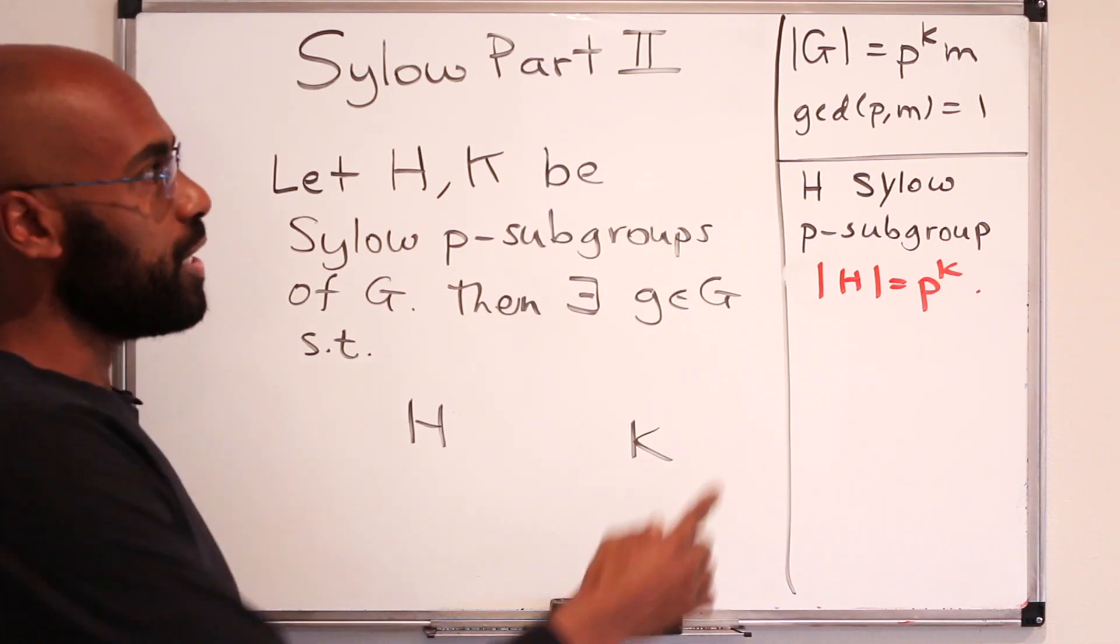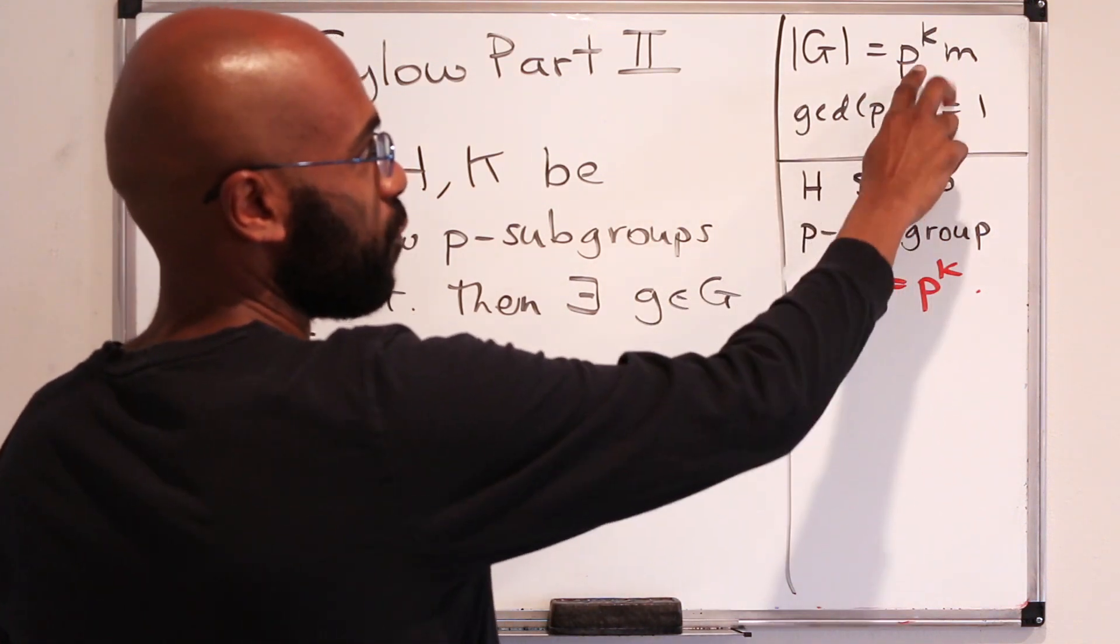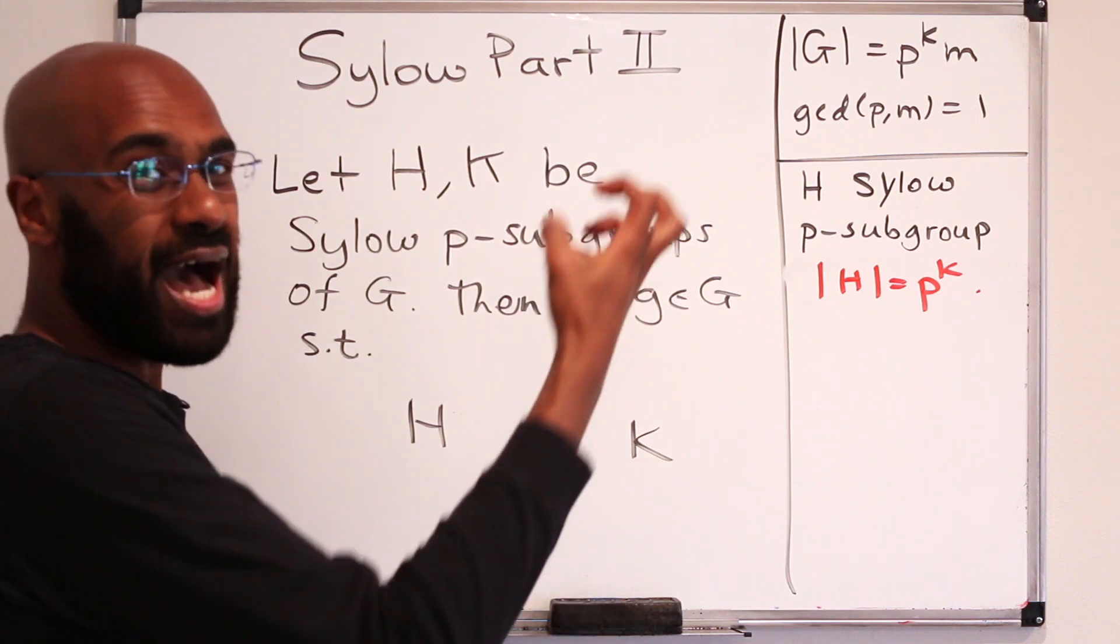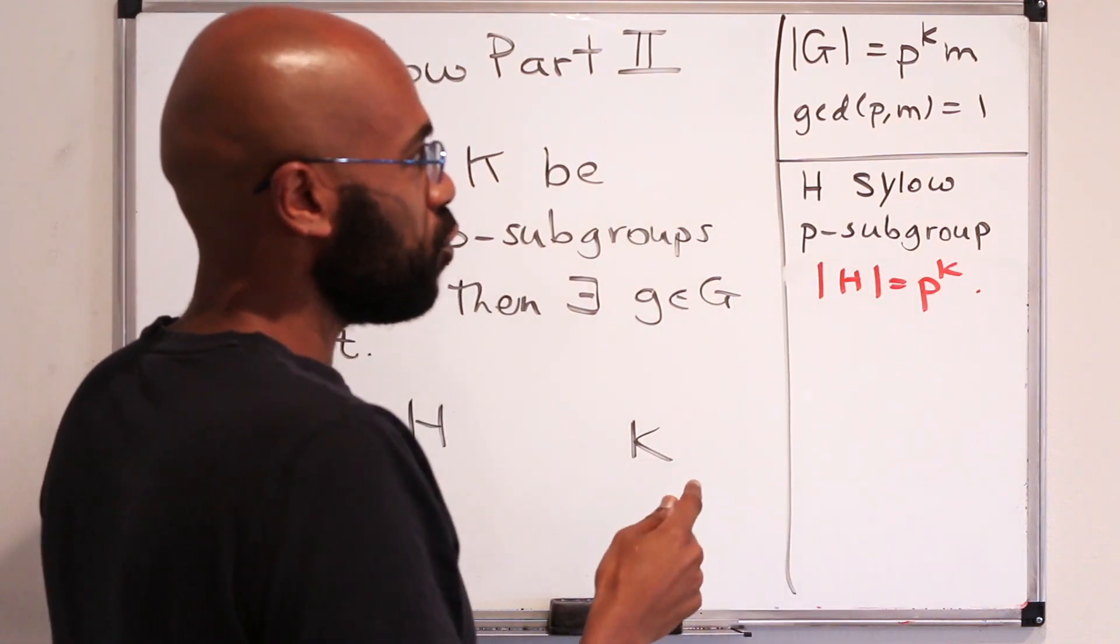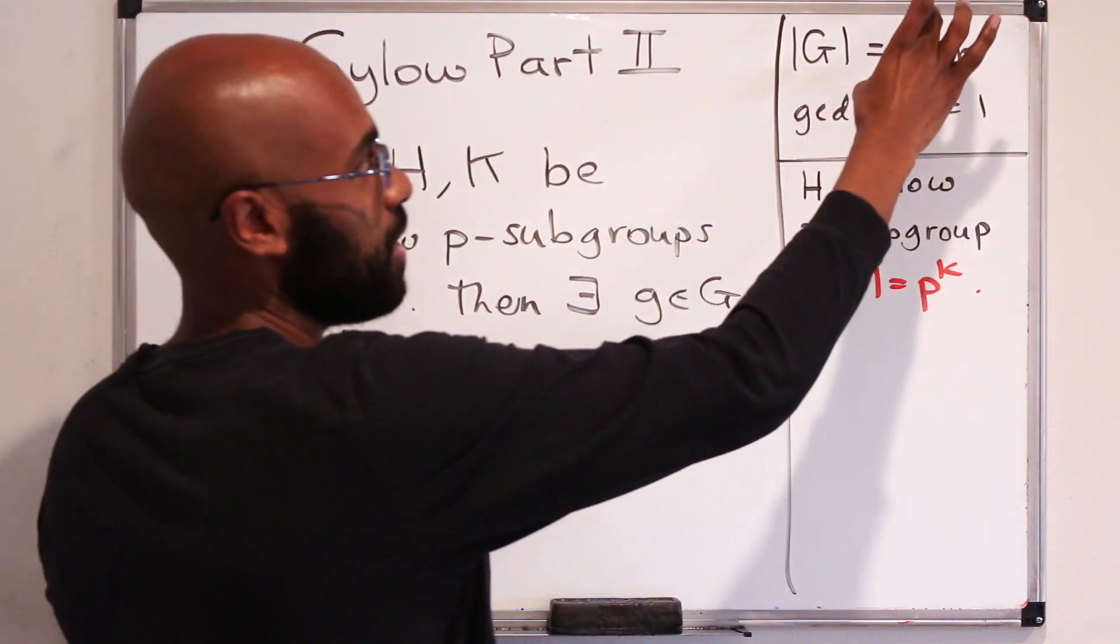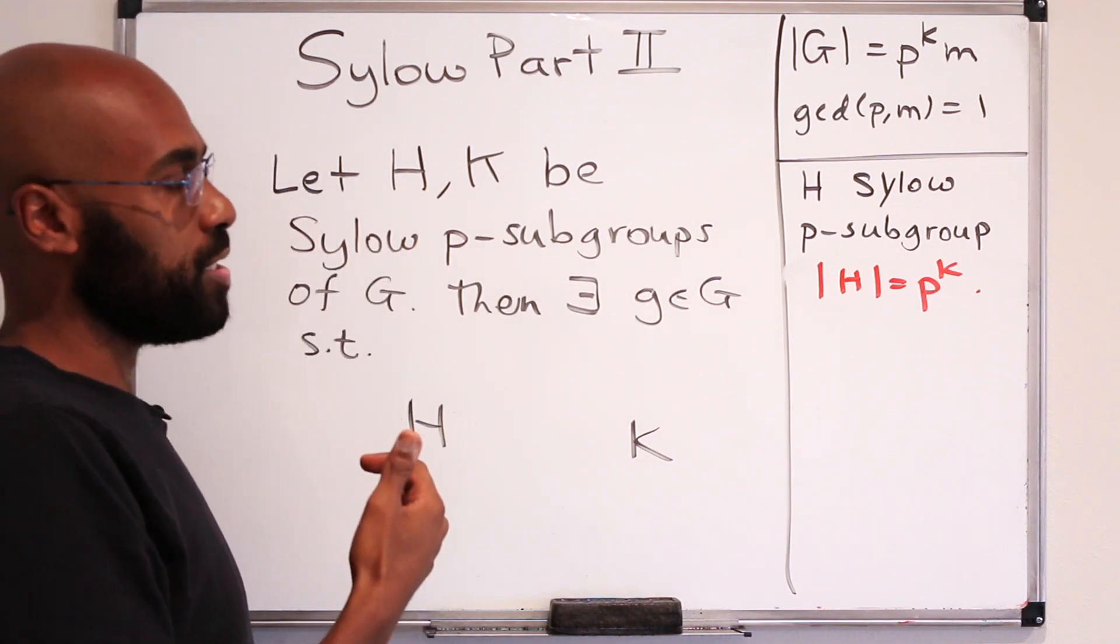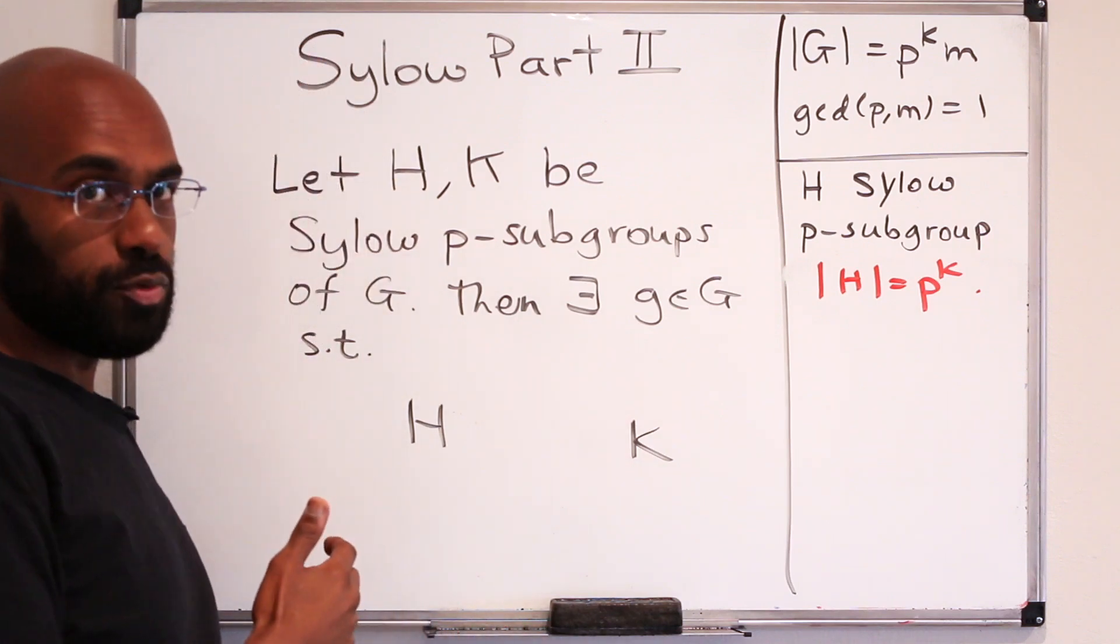So let's recall what the setup is. You have a group G, and the size is P to the K times M, where the greatest common divisor of P and M is 1. So what we're doing here is we're pulling the highest power of a specific prime P out of the size of G. A Sylow P subgroup is a subgroup that has this maximal size with respect to being a power of P. So its size is this P to the K right here, while being a subgroup of G.